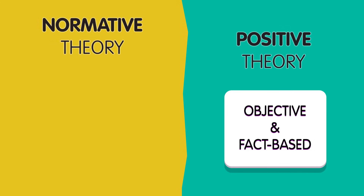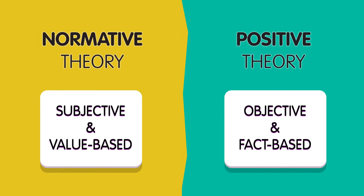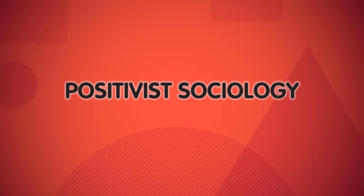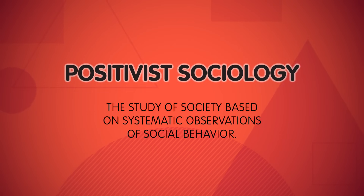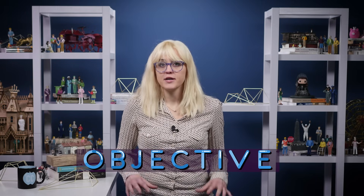Now, you might be wondering where the 'positive' in positivist comes into play. Was Comte just a glass-half-full kind of guy? Well, positive in this case doesn't refer to optimism, and it doesn't mean 'I'm positive that I'm right.' Instead, a positive theory is one that's objective and fact-based, whereas a normative theory is subjective and value-based. Which brings us to the first of our three types of sociological inquiry: positivist sociology, or the study of society based on systematic observations of social behavior. And here, objective is the key word.